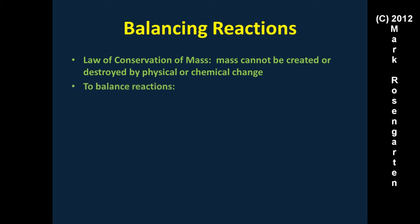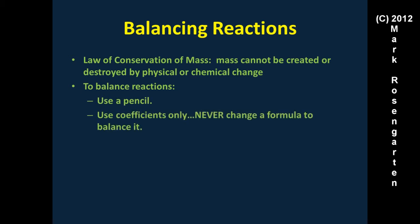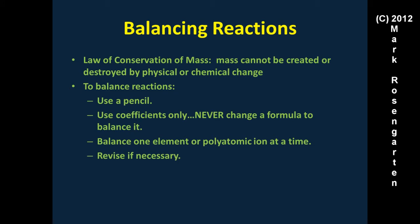To balance reactions, first use a pencil — you'll need it later. Use only coefficients; never change a formula to balance. If you change a formula, you've done it wrong. Balance only one element or polyatomic ion at a time; when balancing one element, completely ignore all others. Revise if necessary — sometimes balancing one thing throws something else off, and a pencil lets you make corrections.